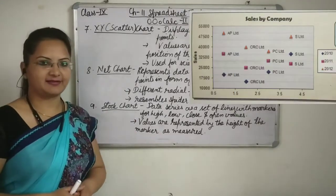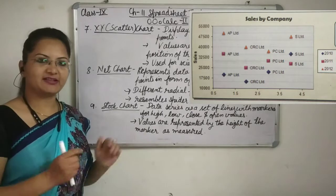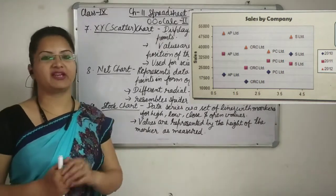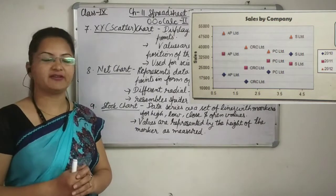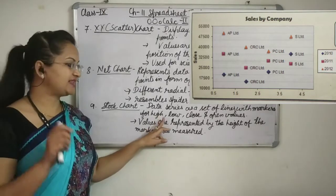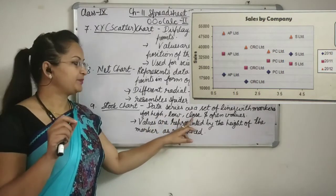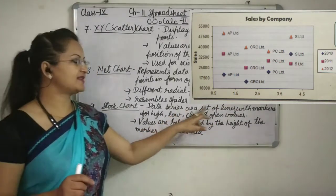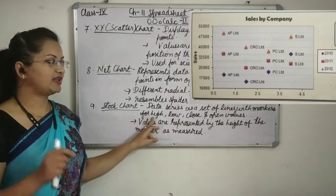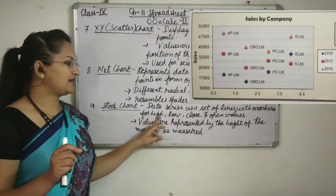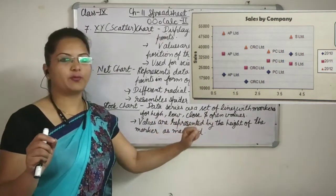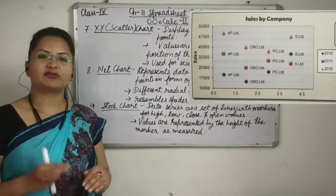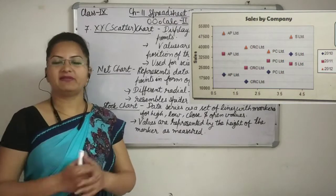Now next is stock chart. As the name suggests, it is related to shares. In shares, few things are very important for any company share — we always need the high value (high price), the lowest price of the day, close price and opening price. It represents the data series as a set of lines with markers. There will be a marker for every price — that means high, low, close and open values. The values are represented by the height of the marker, which allows us to compare various items.